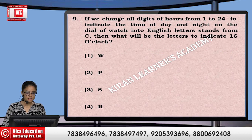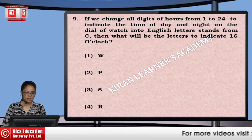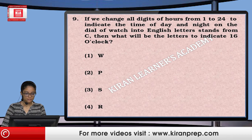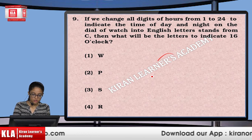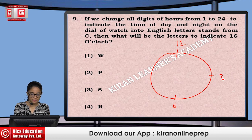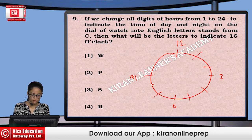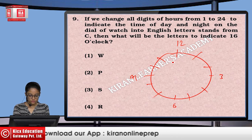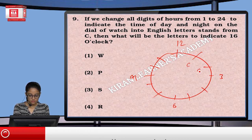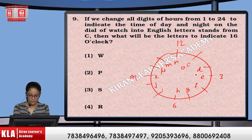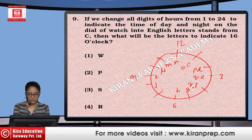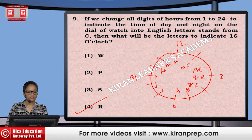Next: If we change all the digits 1 to 24 to indicate the time of day and night on a watch dial into English alphabet letters starting from C, what letter will indicate 16 o'clock? Starting from C for 1: C, D, E, F, G, H, I, J, K, L, M, N, O, P, Q, R. At 16 o'clock, which is 4 PM, we count up to R. So the answer is R — option number 4.